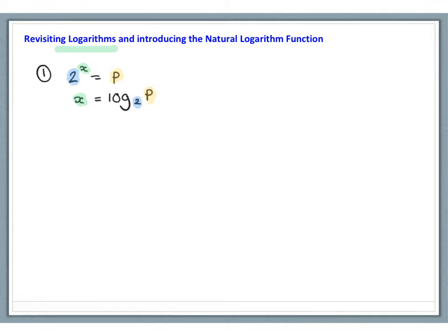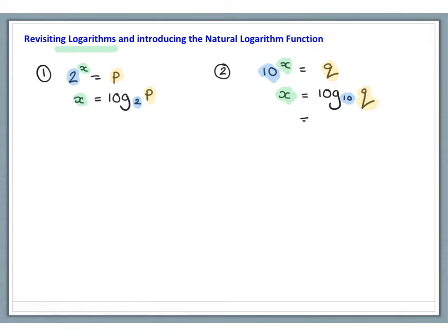For a second example, we have 10 to the power of x equals q. So 10 is our base, x is the power, and q is the value that 10 to the x equals. We know that x is equal to log to the base 10 of q, and log to the base 10 can just be written as log, so we write x equals log q.